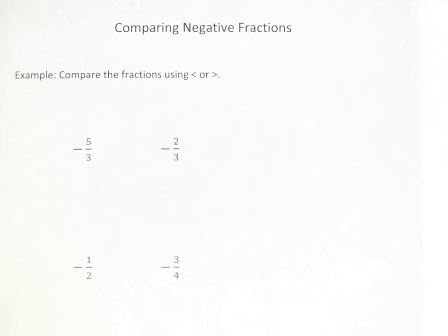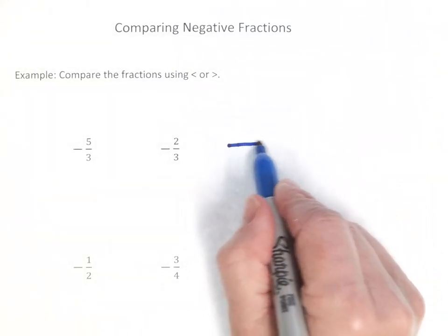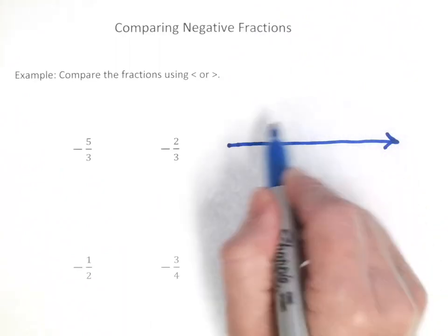Comparing negative fractions such as negative five-thirds and negative two-thirds, it can be helpful to draw a number line to see where they fall in order to determine which is greater than and which is less than.